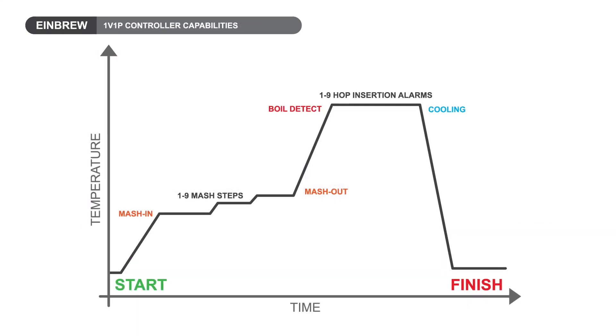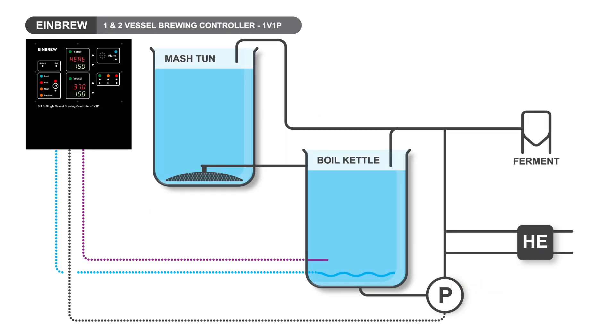It accurately controls the mash temperatures and times, allows for nine mashing stages and grain rests. It has up to nine hop insertion alarms during the boil and will control cooling to the fermentation temperature. The 1v1P can control three kilowatts of heat and a 750 watt pump.